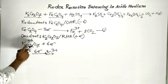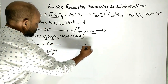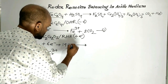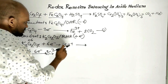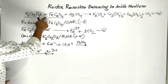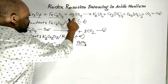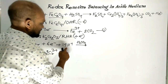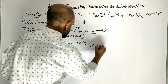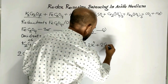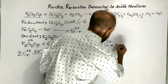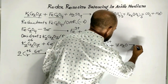Potassium Dichromate, accepting six electrons, changes to products. But before this, the seven oxygen atoms need 14 protons to form water. These 14 protons come from Sulfuric Acid, because this reaction is in acidic medium — Sulfuric Acid provides the protons. As a result, the products are 2K+, two Chromium 3+ ions, and seven molecules of water. This is Equation number two.